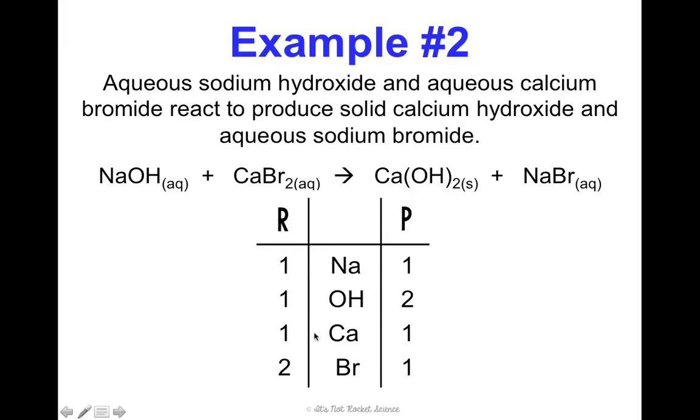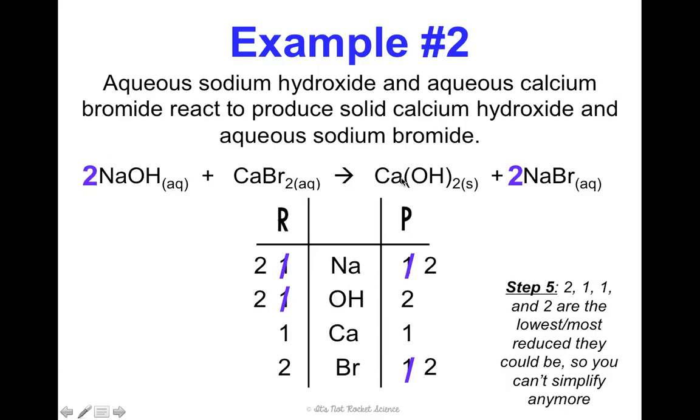Alright, to balance this, don't touch the sodiums or the calciums. We'll figure out our hydroxides. If I multiply this by 2, that gives me now 2 sodiums and 2 hydroxides. So my hydroxides are balanced, but my sodium isn't. So I need to fix it over here. If I multiply it by 2, that gives me 2 sodiums and 2 bromines. Notice that everything is now balanced. And I ended with 2, 1, 1, 2, which cannot reduce or simplify anymore. So you don't need to do step 5.